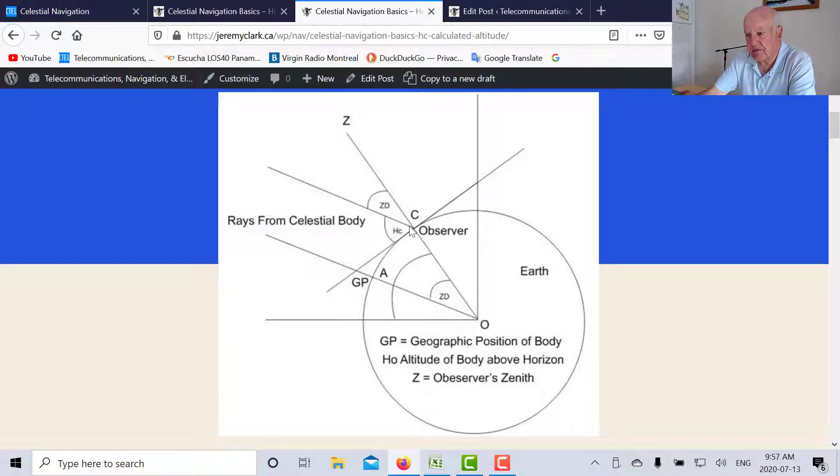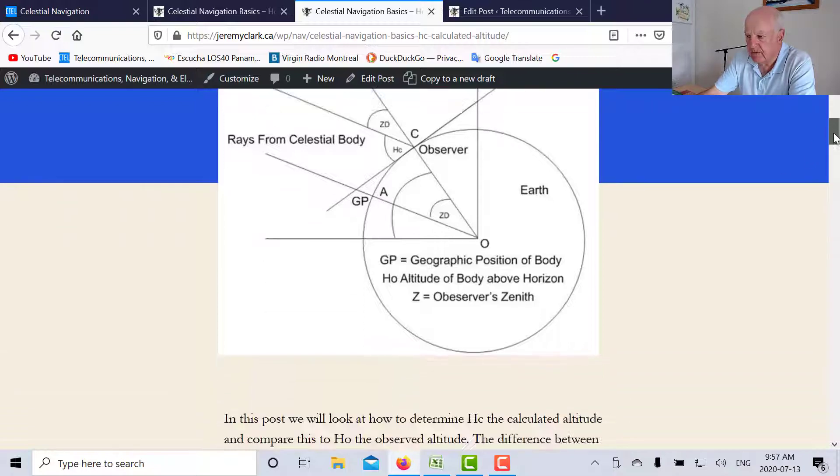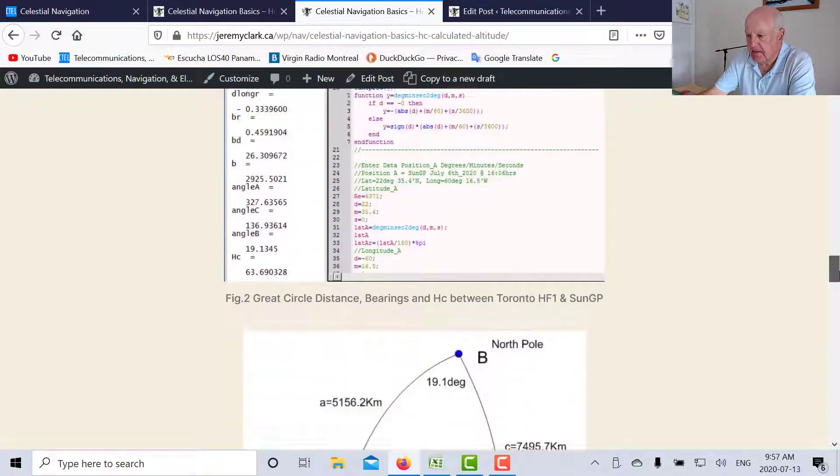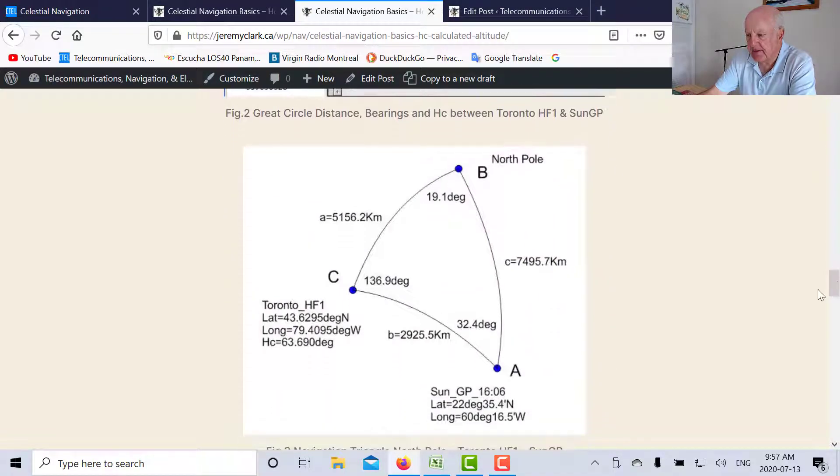How we do that, well we go to what's called the navigational triangle. Here's the navigational triangle down there. There's B the north pole, there's our known location at harbourfront, we know its latitude and longitude. There is the Sun's geographic position. How do we get that? Well we go to the nautical almanac and I'll show you that in a minute and we determine the latitude and longitude from there.